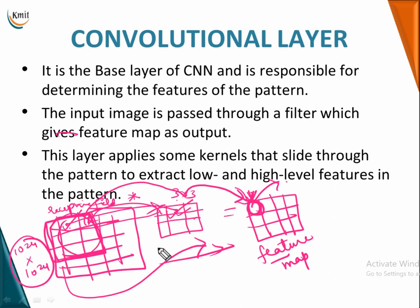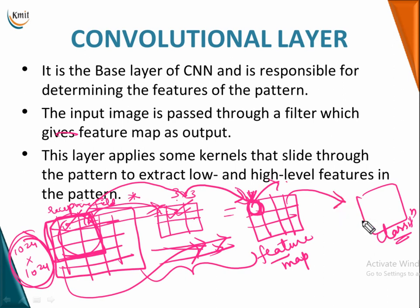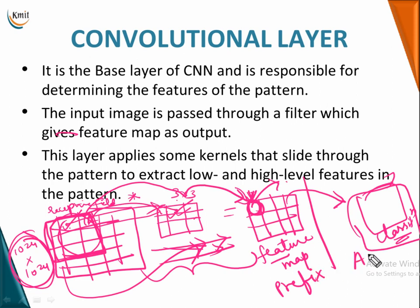The feature map helps reduce the dimension of the input elements, because any classification ANN cannot process so many elements together. So the convolution layer helps you reduce the dimension of your image, extract the feature elements, and make it possible for the classification ANN to classify it. It's like a prefix you give to a normal ANN to make it suitable to work with image data.